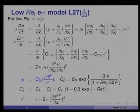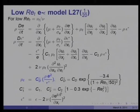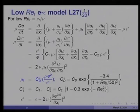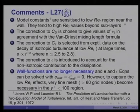The turbulent viscosity is now c_d-star times rho*k² divided by epsilon-star, where c_d-star equals the standard c_d of 0.09 multiplied by exp(−3.4 / (1 + Re_t/50)²). C_1-star is taken as c_1 itself, and c_2-star equals c_2 times (1 − 0.3*exp(−Re_t²)). As Re_t becomes large — moving away from the wall — all constants revert to those used in the high Reynolds number model. The constants are sensitized to the low turbulence region near the wall.